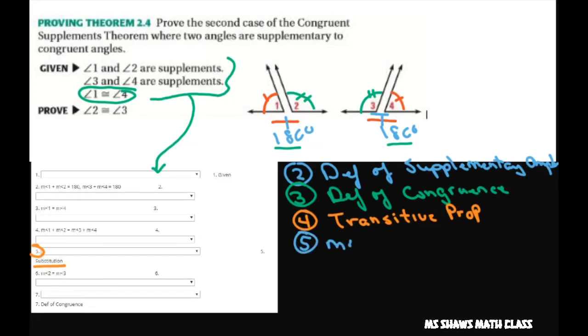The measure of angle 1 plus the measure of angle 2 equals the measure of angle 3 plus the measure of angle 1. So I substituted that in. What got changed was this part.